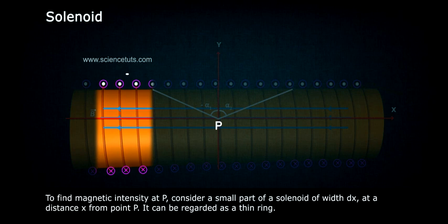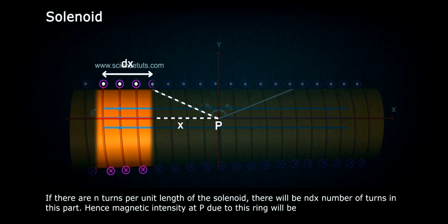Consider a small part of a solenoid with width dx at a distance x from point P. It can be regarded as a thin ring. If there are n turns per unit length of the solenoid, there will be n dx number of turns in this part. Hence, magnetic intensity at P due to this ring will be...